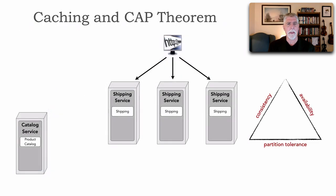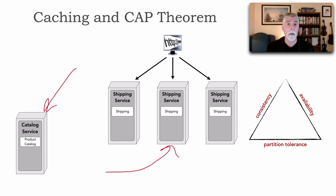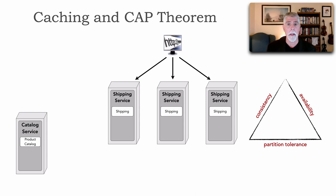So let's talk about caching and CAP theorem. Here I've got a catalog service that maintains all of our product catalogs, and three instances of a shipping service used to calculate shipping costs and manage shipping of items to customers. I've got the CAP theorem triangle from lesson 111 on the right-hand side, and I'm going to use that to illustrate how CAP theorem works with caching.